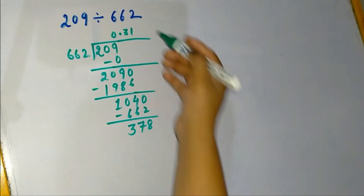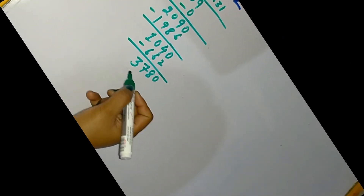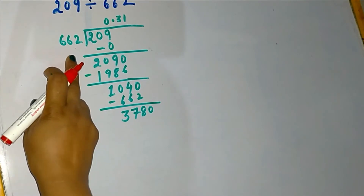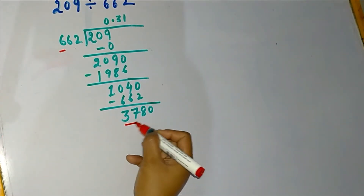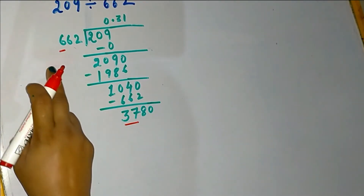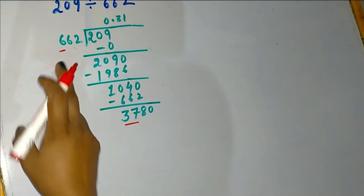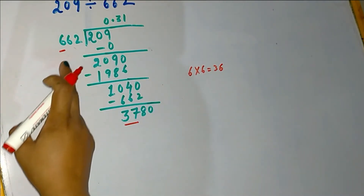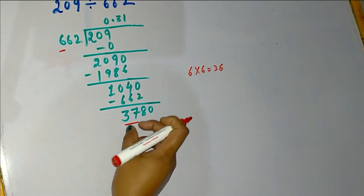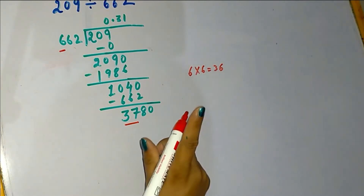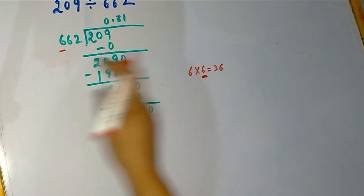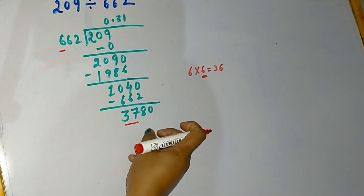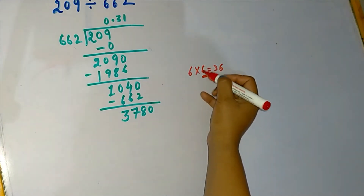Again, due to this decimal point, we are allowed to put one zero here. Now we have the number 3780. To find whether this comes in the table of 662, we take 6 and the last two digits 37. Since 6 × 6 is 36, which is less than 37, we could go for 6 times 662, but use your common sense. The difference between 37 and 36 is only 1, so 6 times 662 would give a number greater than 3780. It is better to go for 5 times.